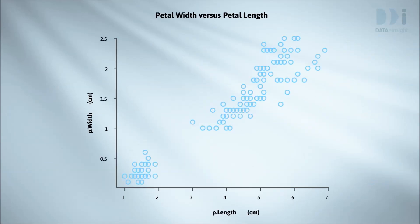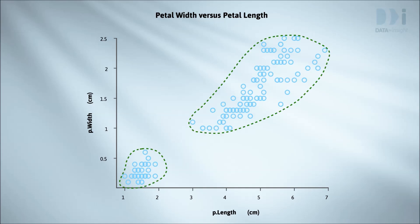This is data on petal widths and petal lengths of iris flowers. It is from a famous data set called Fisher's Iris Data. The most striking feature is the clear separation into two clusters. Clustering points to the existence of distinctly different groups, and should set us wondering about what the defining characteristics for those groups might be. Here it turns out that the lower cluster comes from a different species than the upper cluster. The upper cluster is actually a mixture of two species, but they do not separate on these variables.